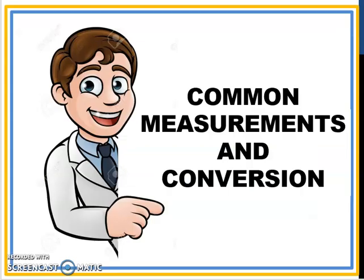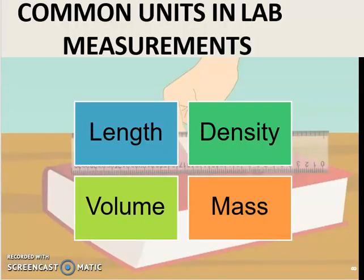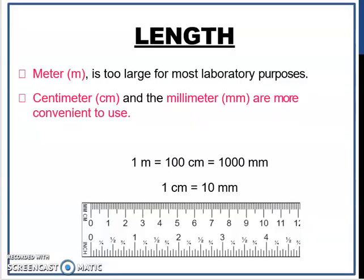Now proceed to common measurement and conversion. These are some common units that we usually use in measurement: length, density, volume, and mass. We will learn how to do unit conversion in length, density, volume, and mass. For length, the SI unit is meter, but meter is too large for most laboratory purposes, so centimeter and millimeter are more convenient to use. One meter equals one hundred centimeters, which equals one thousand millimeters, and one centimeter equals ten millimeters.